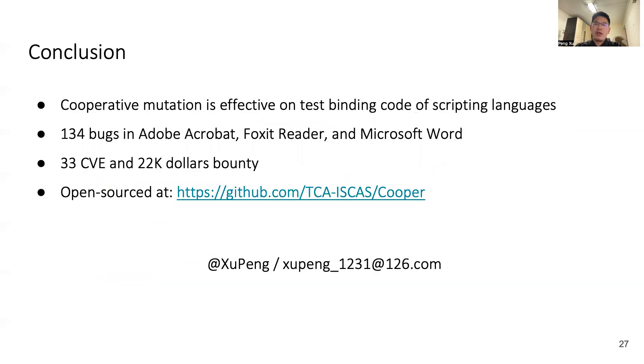In conclusion, we propose cooperative mutation to test the binding code of scripting languages. Our system, Cooper, found 134 bugs in Adobe Acrobat, Foxit Reader, and Microsoft Word. We received 33 CVE numbers and $22,000 bounty. Cooper is now open sourced at this website. Thanks for listening. I'm ready for questions.